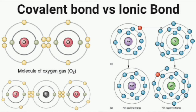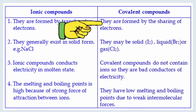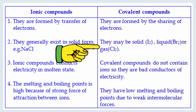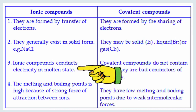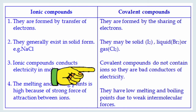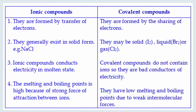Let's compare ionic compounds with covalent compounds. Ionic compounds are formed by the transfer of electrons, whereas covalent compounds are formed by sharing of electrons. In ionic compounds, the metal gives its electron to the non-metal, whereas in covalent compounds there is no give and take — just sharing of electrons takes place. Ionic compounds usually exist in solid form, but covalent compounds can be seen in solid, liquid, or gaseous form. Ionic compounds can conduct electricity in molten state because they have free ions that can move. Covalent compounds do not contain ions and hence are poor conductors of electricity. Ionic compounds have high melting and boiling points due to strong forces of attraction between ions, whereas covalent compounds have low melting and boiling points due to weak intermolecular forces.